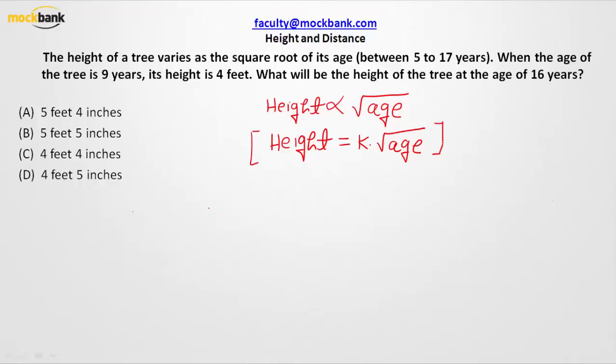So height equals k times square root of age. Now I know certain things: that the age of the tree is 9 years when the height is 4 feet. So height is 4 feet, and this is k times square root of 9, which becomes 4 equals 3 times k.